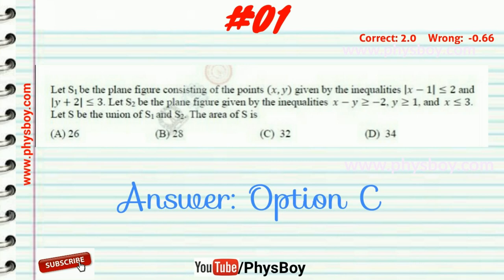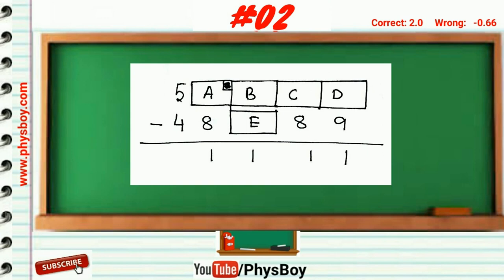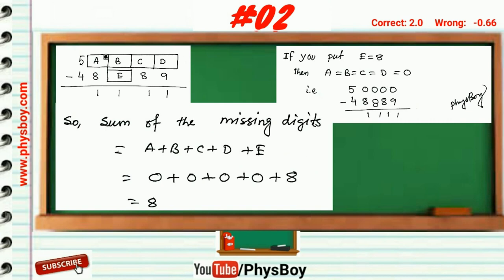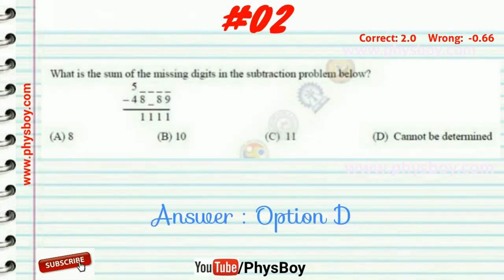Question number two: What is the sum of the missing digits in the subtraction problem shown? Let the missing digits be a, b, c, d, and e. If e = 8, then a, b, c, d are all equal to 0, giving a sum of 8. However, if e takes any other value from 0 to 9, then a, b, c, d also change accordingly, so the sum cannot be uniquely determined. Therefore, option D is the correct answer.